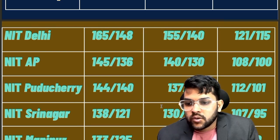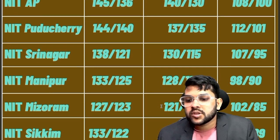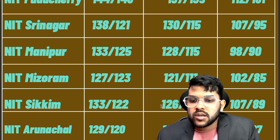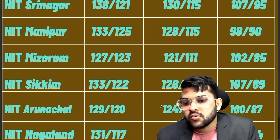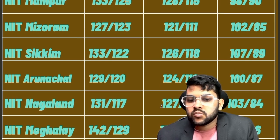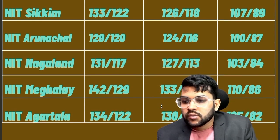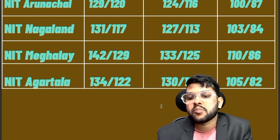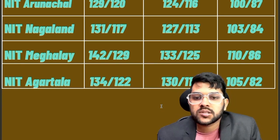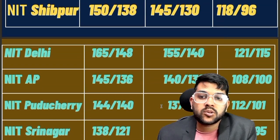Srinagar: 138, 130, 107. Manipur: 133, 128, 98. Mizoram: 127, 121, 102. Sikkim: 133, 126, 107. Arunachal: 129, 124, 100. Nagaland: 131, 127, 103. Meghalaya: 142, 133, 110. Agartala: 134, 130, and 105 marks. So these are the complete information regarding OBC category. Hope you find this information useful. Please try to subscribe the channel so you will get everything at the right time. Thank you.